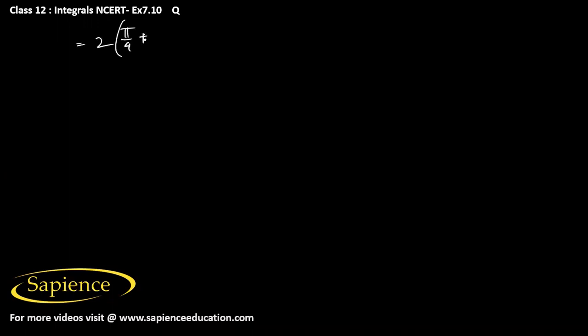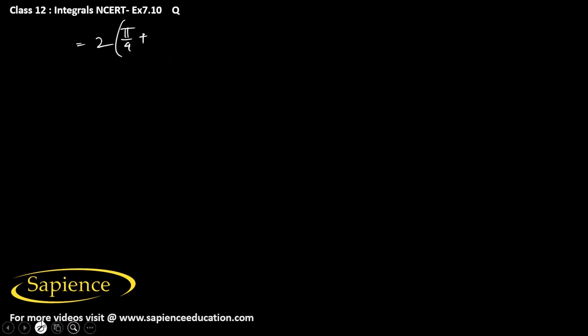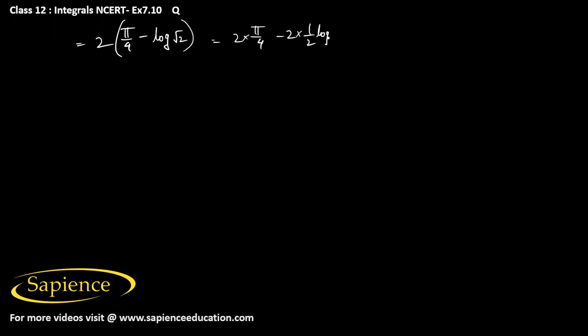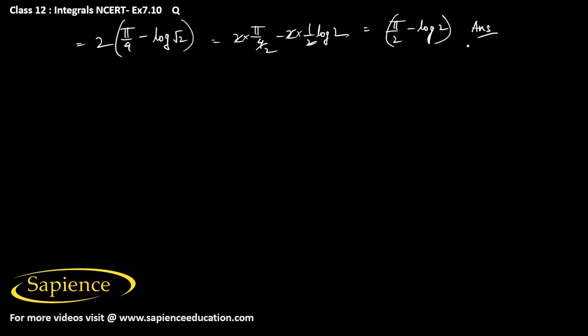So this equals 2 into (π/4 + log(1/√2)), which gives 2 · π/4 + 2 · log(2^(−1/2)). This simplifies to 2 · π/4 minus 2 · (1/2) · log 2. The 2 and 1/2 cancel, so the final answer is π/2 minus log 2.